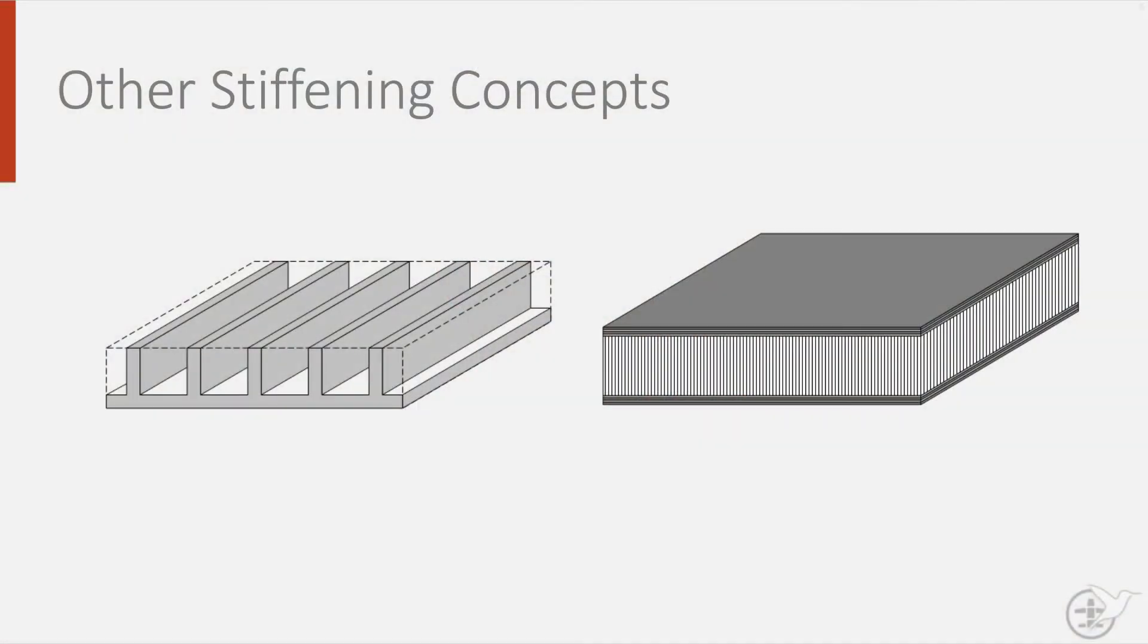Today I will be discussing the concept of monocoque structures, another stiffening concept. These are structures where the skin supports all the load as well as providing the stiffness. It is characterized as being one single piece.